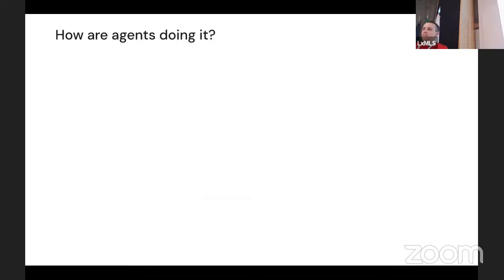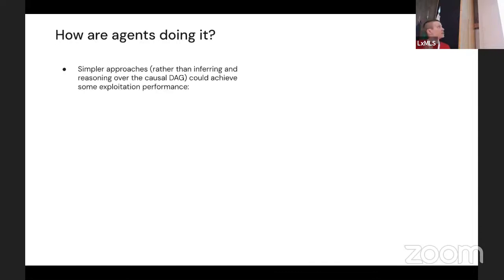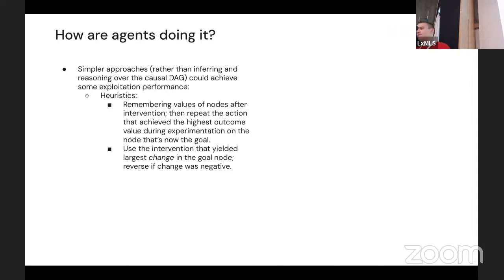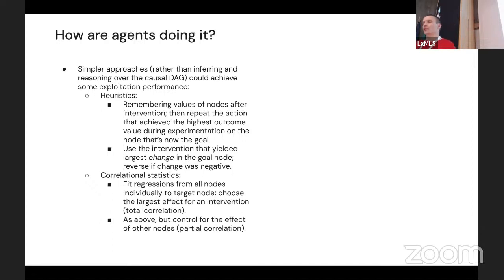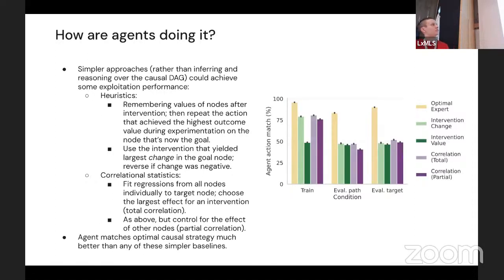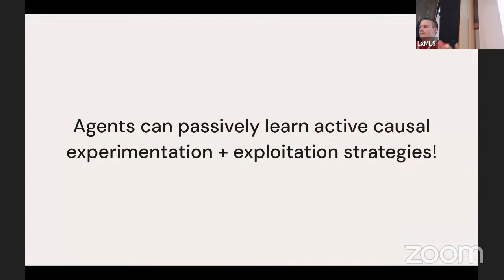The yellow curve shows accuracy on training causal structures — it very rapidly reaches high accuracy. On either of the test cases, accuracy also climbs fairly rapidly and continues to improve over training. But that's somewhat weak evidence. There are simpler approaches — heuristics like remembering node values, how they changed after interventions, or using correlational statistics. We took all these heuristic policies and compared them to the agent and to an optimal expert policy. In both train and evaluation conditions, the agent matches the expert policy almost all the time, and much better than any heuristic baseline, suggesting the agent has learned some form of causal experimentation and exploitation strategy.